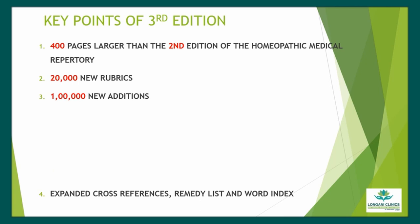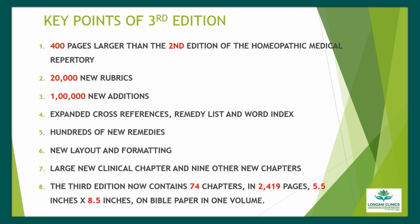Key points of the 3rd edition: 1. 400 pages larger than the 2nd edition; 2. 20,000 new rubrics; 3. 1 lakh new additions; 4. Expanded cross-references, remedy list, and word index; 5. Hundreds of new remedies; 6. New layout and formatting; 7. Large new clinical chapter and 9 other new chapters; 8. The third edition now contains 74 chapters in 2,419 pages, 5.5 inches by 8.5 inches, on Bible paper in one volume.